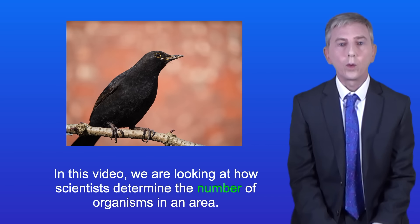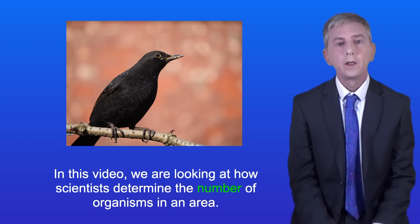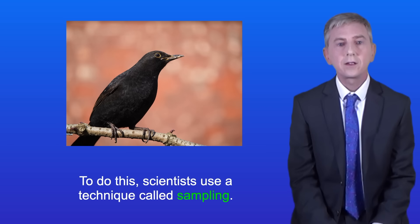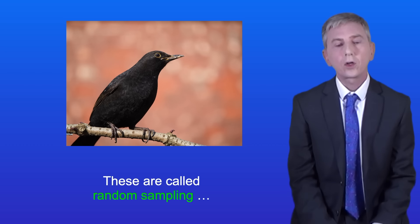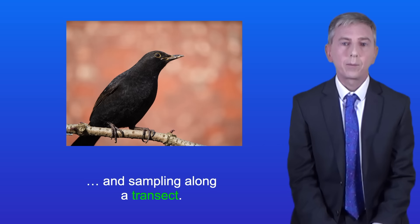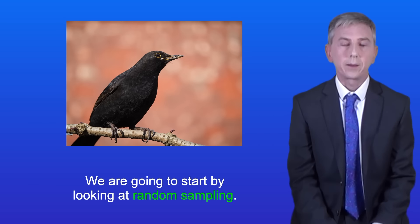In this video we're looking at how scientists determine the number of organisms in an area. To do this scientists use a technique called sampling, and there are two ways to do this: random sampling and sampling along a transect. We're going to start by looking at random sampling.